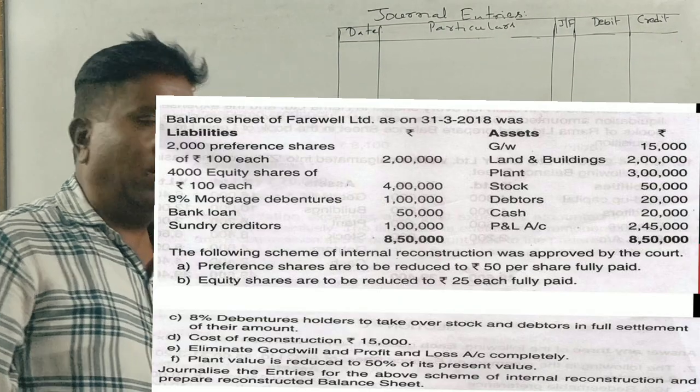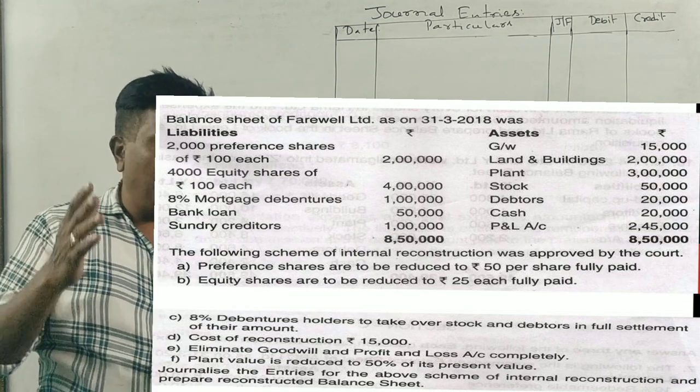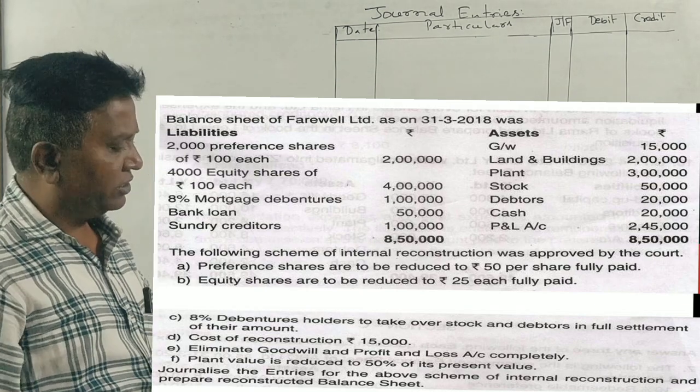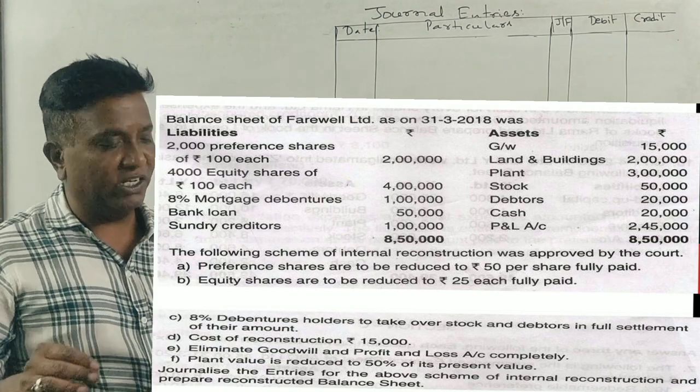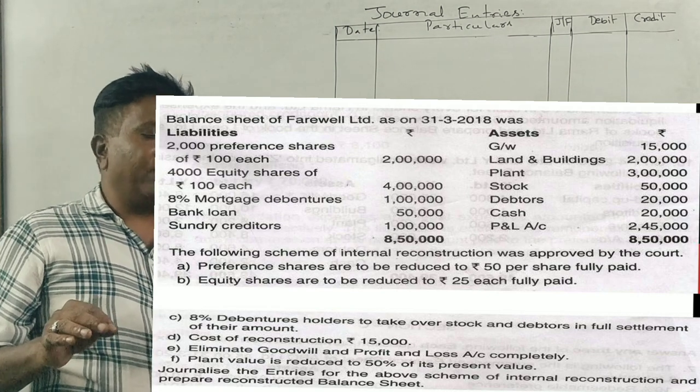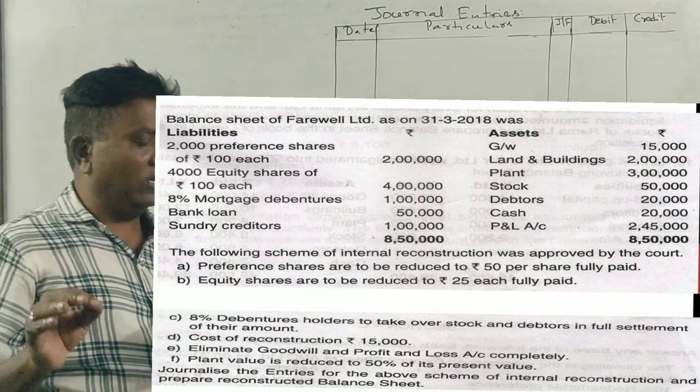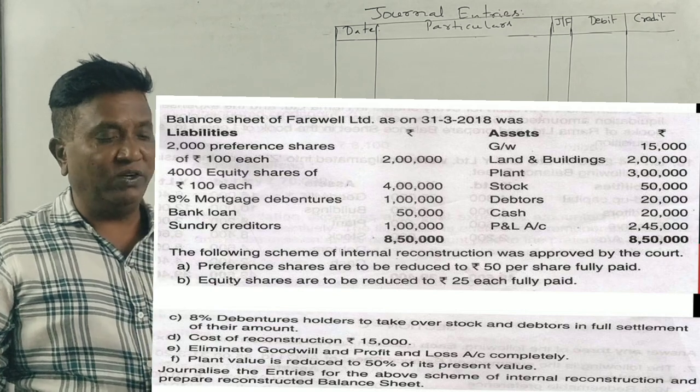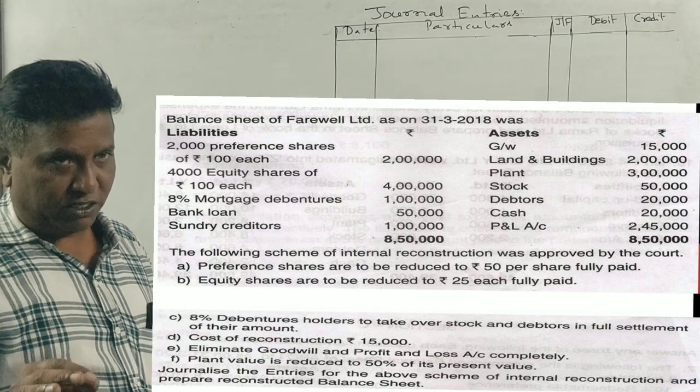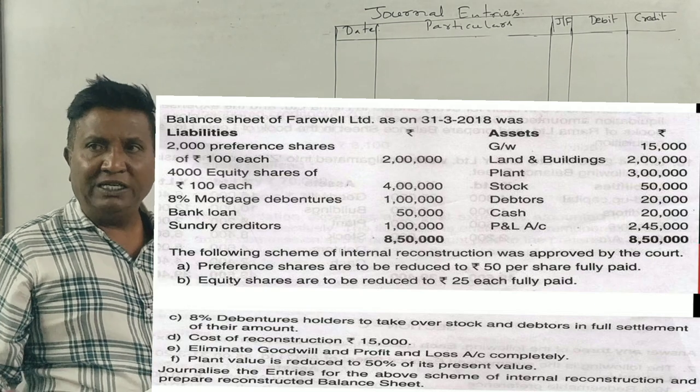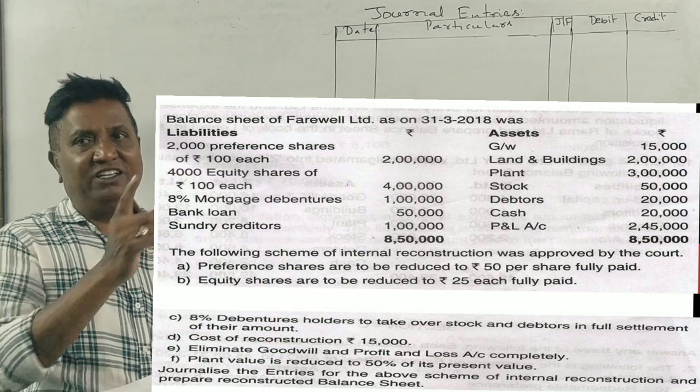This is a 2018 question on internal reconstruction. The balance sheet of Farewell Limited as on March 2018 was as follows: 2,000 preference shares of 100 each, 4,000 equity shares of 100 each, 8% mortgage debentures 1 lakh, bank loans and creditors, goodwill, land and buildings, plant, debtors, cash, and profit and loss.